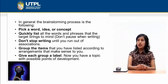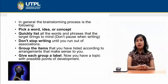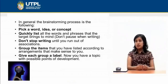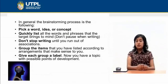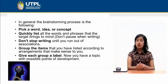In general, the brainstorming process is the following: you need to pick a word, idea, or concept. Then quickly list all the words and phrases that the target brings to mind. Don't pause when writing until you run out of associations. Then, you need to group the items you have listed according to arrangements that make sense to you. Give each group a label — now you have a topic with possible points of development.